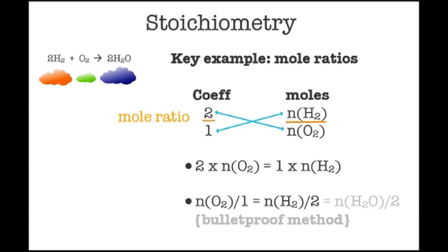To find mole ratios, set up headings of coefficient and moles. You can see straight away the ratio is two to one. We'll keep going just to see how this pans out. We cross multiply, and that gives you two times the moles of oxygen equals one times the moles of hydrogen. You can rearrange that to arrive at this bulletproof method for mole ratios, which is really just a shortcut, and it's the way that I'd actually do these kinds of problems because it's so much quicker to go straight to this last line in one step.